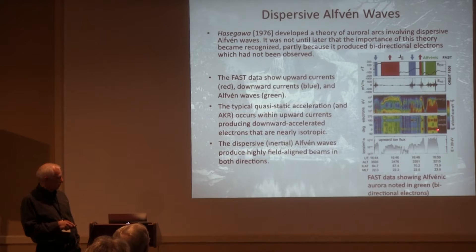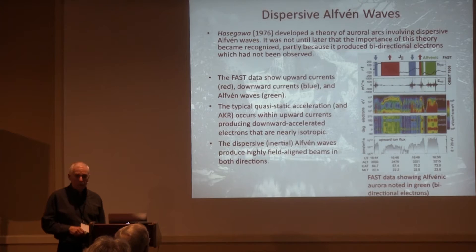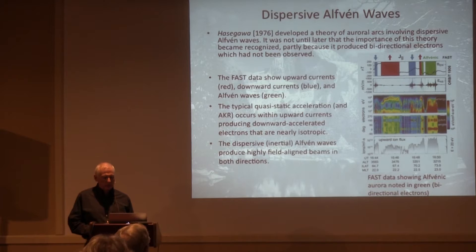I would predict you don't see AKR mapped to the Alfvénic region — because if you have to have a density cavity, that would be limited to the inverted-V region. So this is another very current and future topic that didn't start at Yosemite '74, but started soon thereafter.